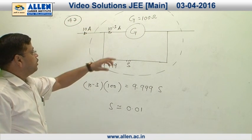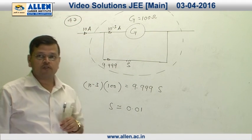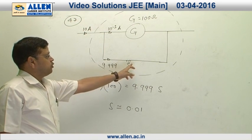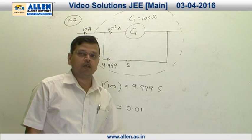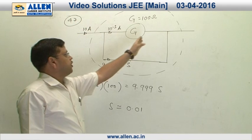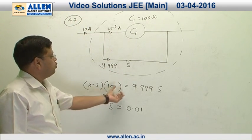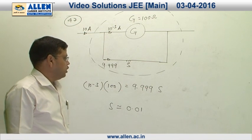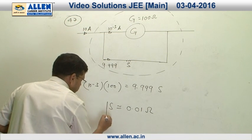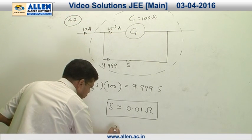Out of that 10 ampere current, 1 milliampere must pass through the galvanometer as that is the full scale deflection current, and the remaining current passes through the shunt added in parallel. Equating the potential difference across the galvanometer and the shunt: 10^-3 × 100 = I_s × S. Calculating, the value of shunt comes out to be 0.01 ohm, so the correct option is 2.